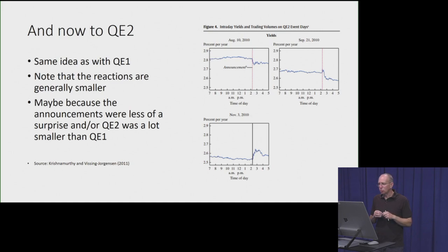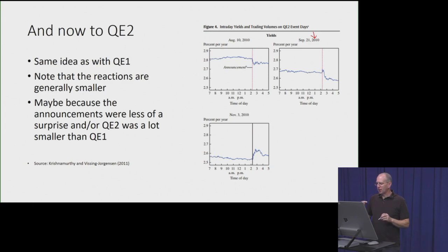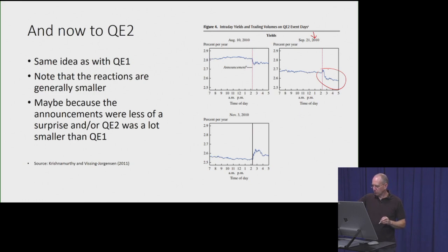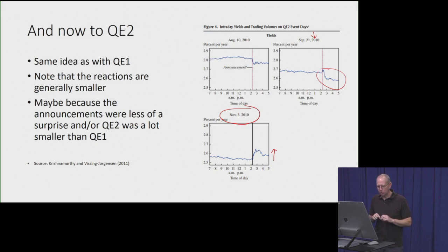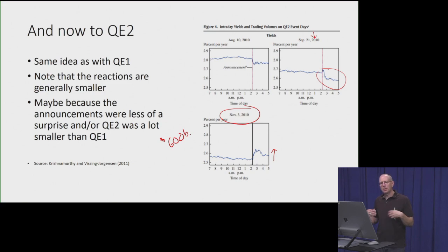QE2 was announced in 2010 on a much smaller scale. There was preliminary speculation on September 21, 2010, and then the actual official announcement on November 3, 2010. Interestingly, interest rates actually rose on the QE2 announcement — possibly because QE2 was much smaller than anticipated at only around $600 billion, when financial markets were expecting more. So it may have been somewhat of a disappointment.